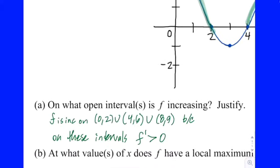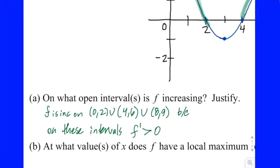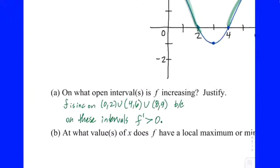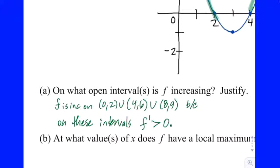Now, if you didn't say 'f is increasing on' and just wrote the intervals down, that would be fine in this case, simply because part A is only asking you that one question. But sometimes part A might ask you where it's increasing and decreasing, so if you're labeling both, you need to specify which is which. If you just get in the habit of writing full sentences, you'd be in good shape. So which part of that is the justification? The second part — you're basically explaining what you were looking for on the graph to come up with those intervals.